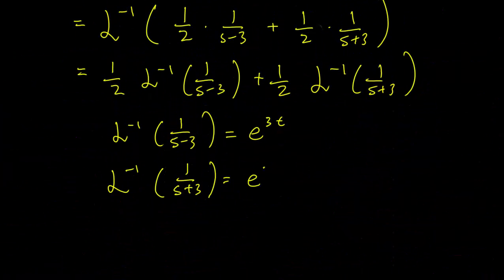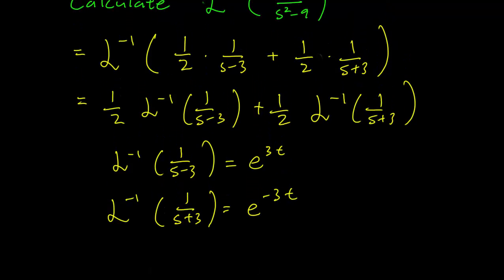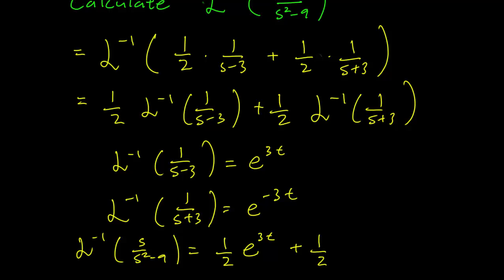And that's all we have, which means that our inverse Laplace transform is going to be 1/2 times e^(3t) plus 1/2 times e^(minus 3t), and that's all there is to it.